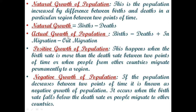Actual growth of population depends on birth minus death plus immigration minus out-migration. Positive growth of population happens when the birth rate is higher than the death rate between two points of time, or when people from other countries migrate permanently to the region. Negative growth of population occurs when the death rate is higher than the birth rate, or when people migrate to other places.